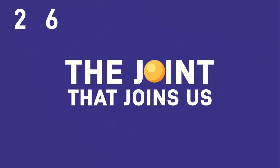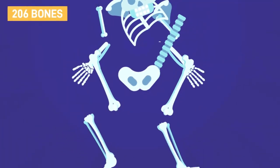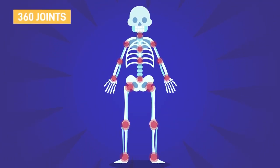The joints that join us. The human body has 206 individual bones. These bones come together at connections called joints.